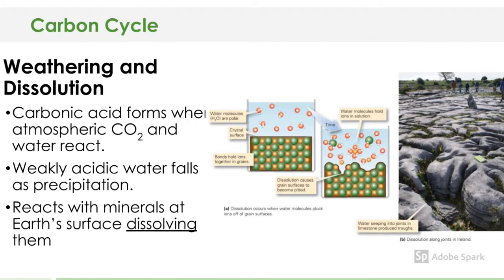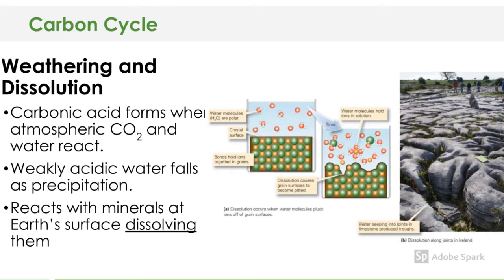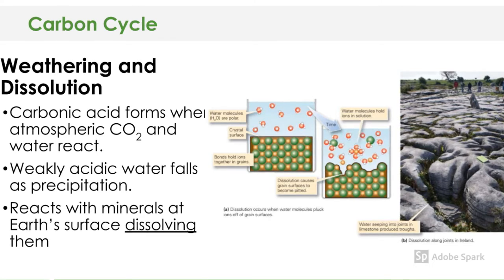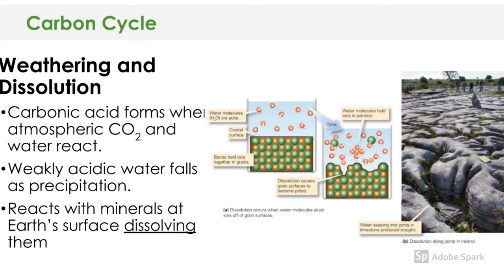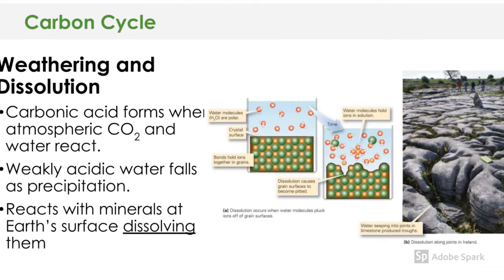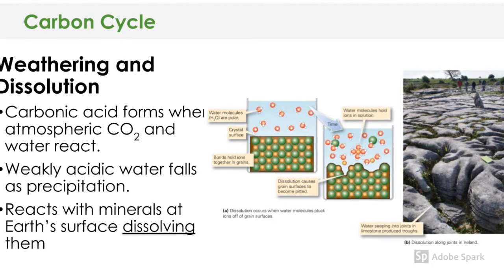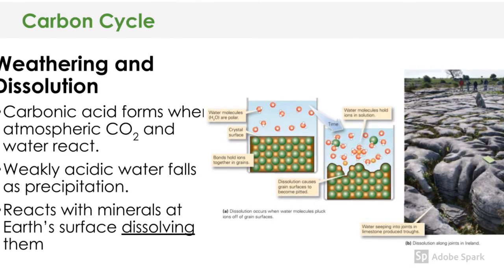Weathering and dissolution: most of you have probably heard of weathering, but not dissolution. Carbonic acid forms when atmospheric carbon dioxide and water react — this is what causes acid rain to fall. When acid rain falls, it reacts with the minerals of the Earth's surface, dissolving them. Dissolution is this process of the acid rain dissolving the Earth's surface.